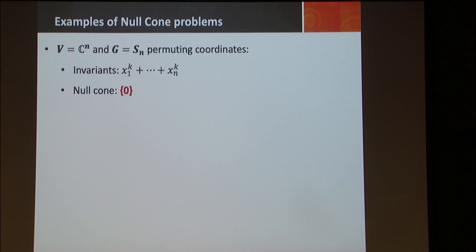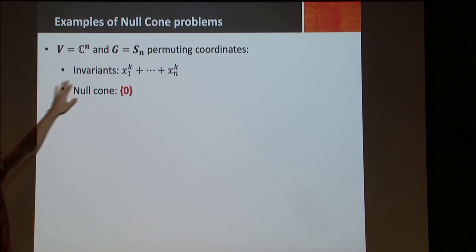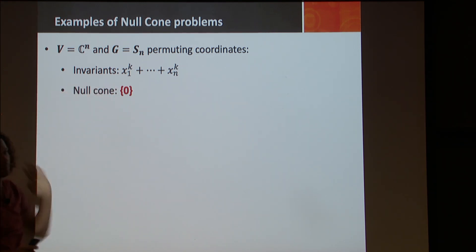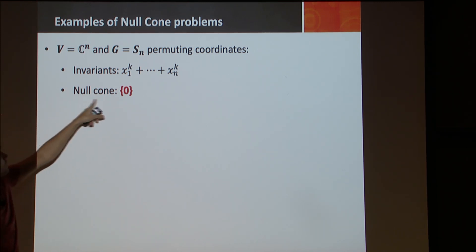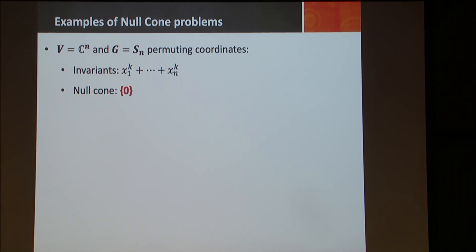Let's see some examples of null cones. If I have the group C^n and the permutation group acting by permuting coordinates, the invariants are generated by the sums of powers. Since the group is discrete, the null cone is only the zero vector — there's nothing else there besides the zero vector.